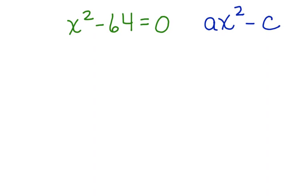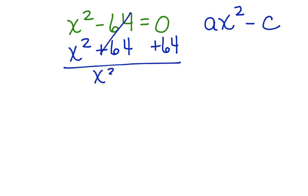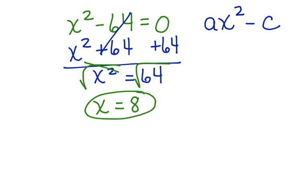To do that, let's solve it. First, we want to get x alone, so we're going to add 64 to both sides. This cancels. Bring down the x squared equals 64. Now we can take the square root of both sides. These cancel, and we're left with x equals 8. Alright, we have solved the equation, and our work is done.